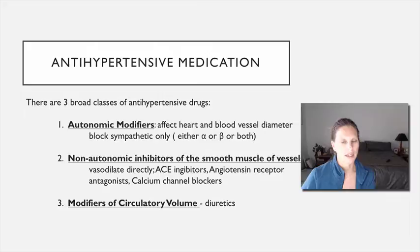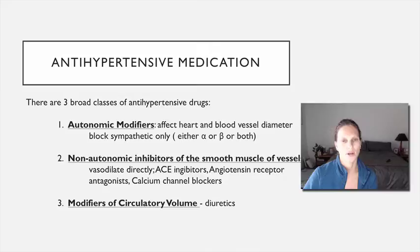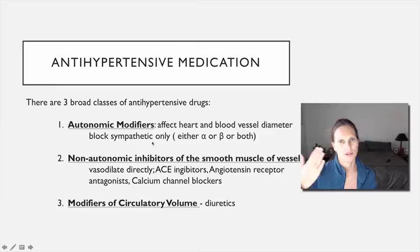The drugs are divided into three broad classes in the textbook. The first are autonomic modifiers, which affect heart and blood vessel diameter by blocking the sympathetic nervous system — either alpha, beta, or both receptors. The second are non-autonomic inhibitors of smooth muscle, which vasodilate directly — that's where ACE inhibitors, angiotensin receptor blockers, and calcium channel blockers fit. And then there are the diuretics, plus centrally acting agents that modify the autonomic nervous system from higher up.